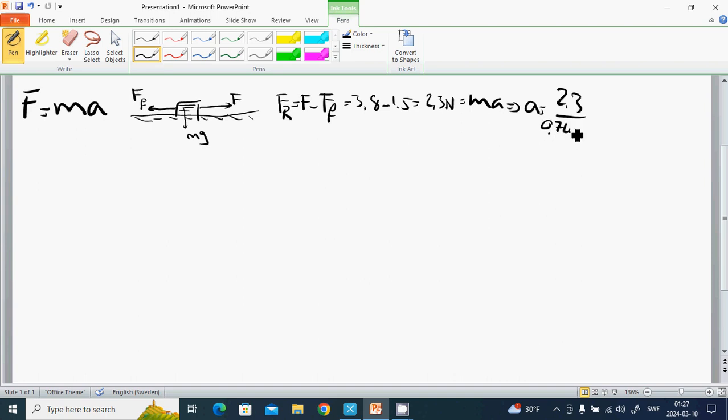Then a equals 2.3 divided by mass which is 0.74, and it is 3.11 meters per second squared. Another example is a curling stone, m is 18 kilograms. It shoots on an ice wave with velocity 5 meters per second.